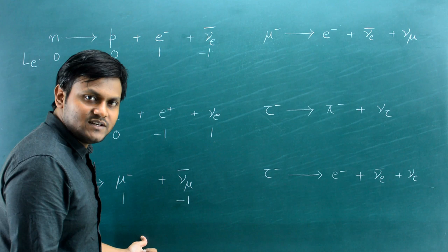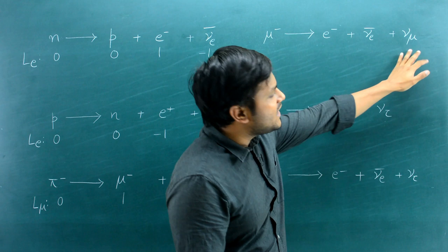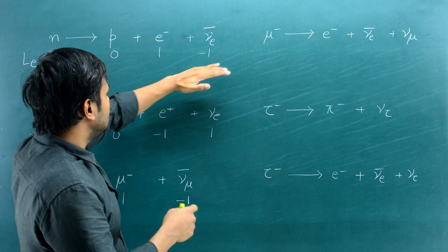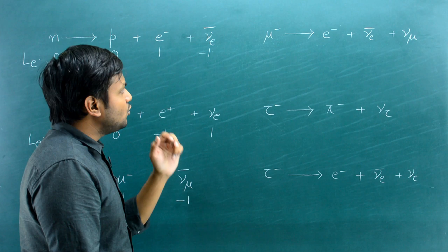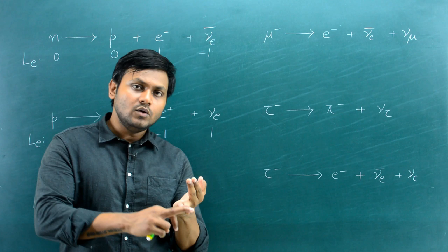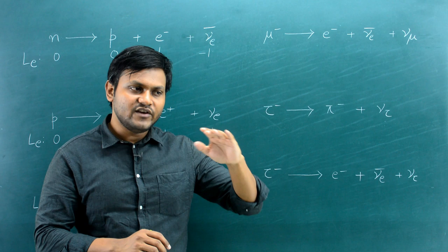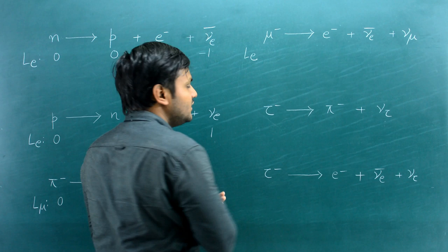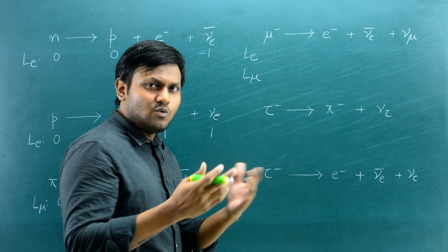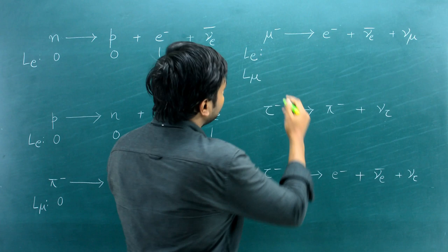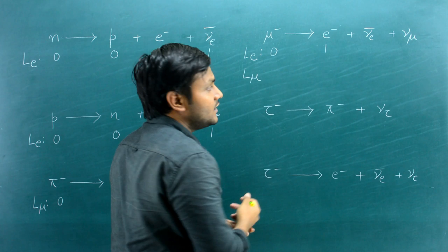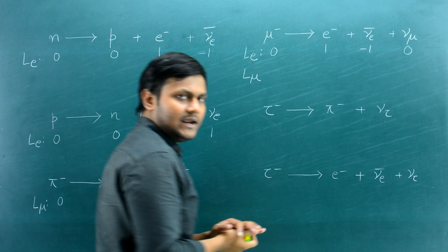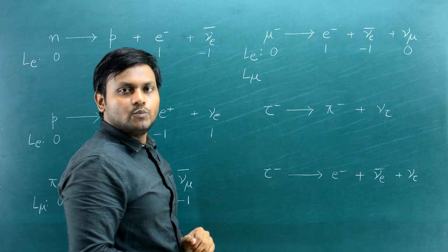A free muon particle can decay into an electron, an electron anti-neutrino, and a muon neutrino. This involves both the electron and muon families, so we check them separately. For the electron lepton number: muon = 0, electron = +1, electron anti-neutrino = −1, muon neutrino = 0. Left: 0, right: 1 + (−1) = 0 — conserved. For the muon lepton number: muon = +1, electron = 0, electron anti-neutrino = 0, muon neutrino = +1. Left: 1, right: 1 — also conserved.